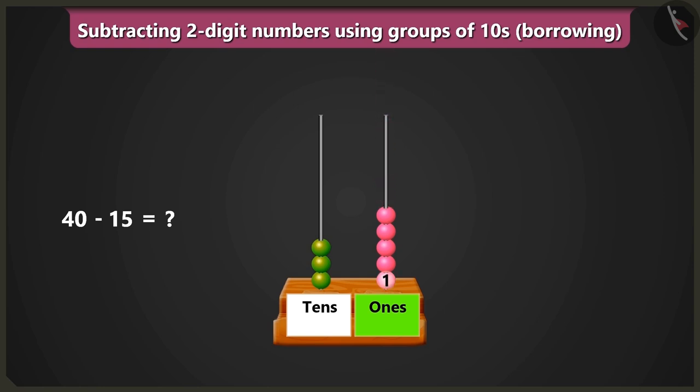So one, two, three, four, and five beads would remain. Now we will subtract in the box of tens. And if we remove one bead from three beads, then two beads would remain, which means two tens.